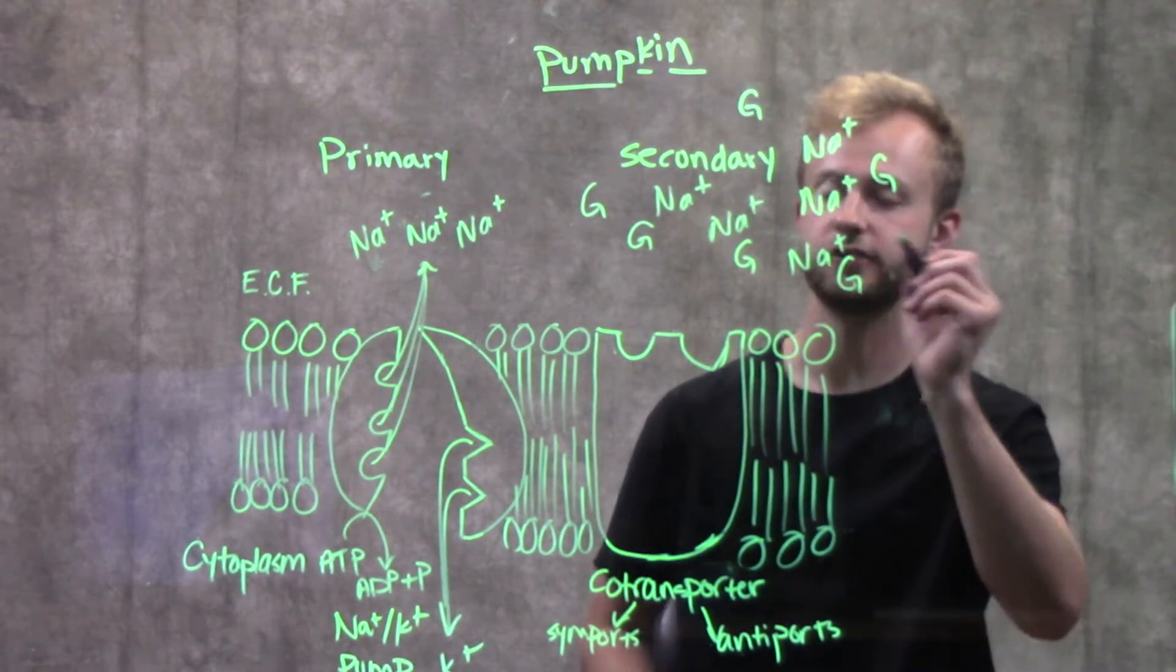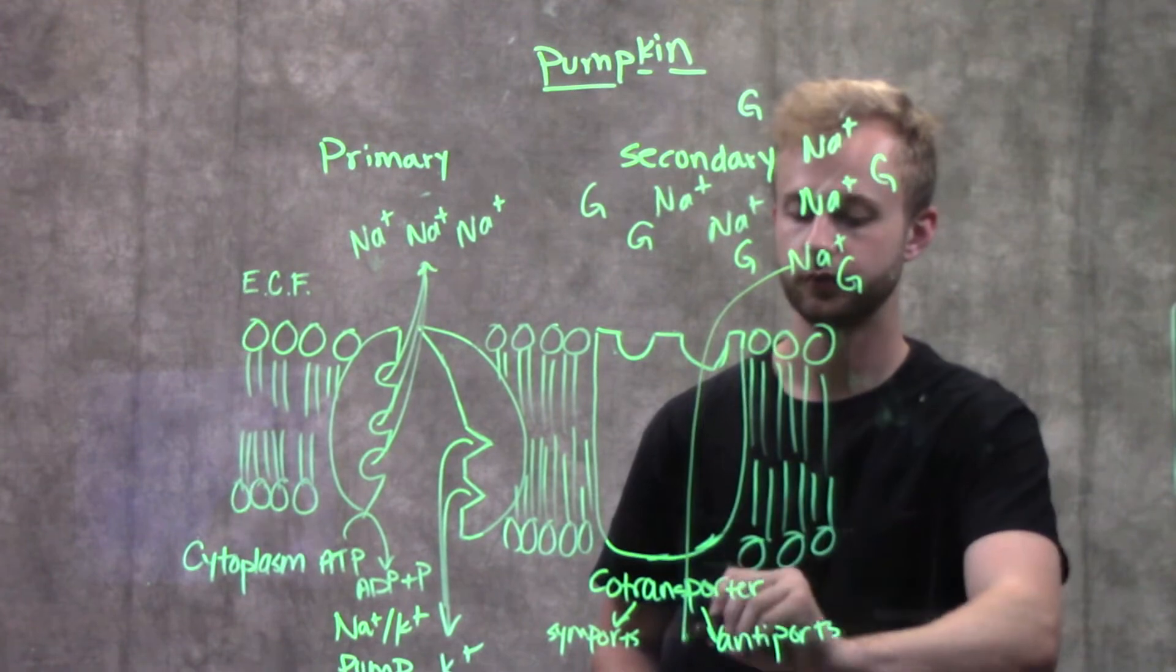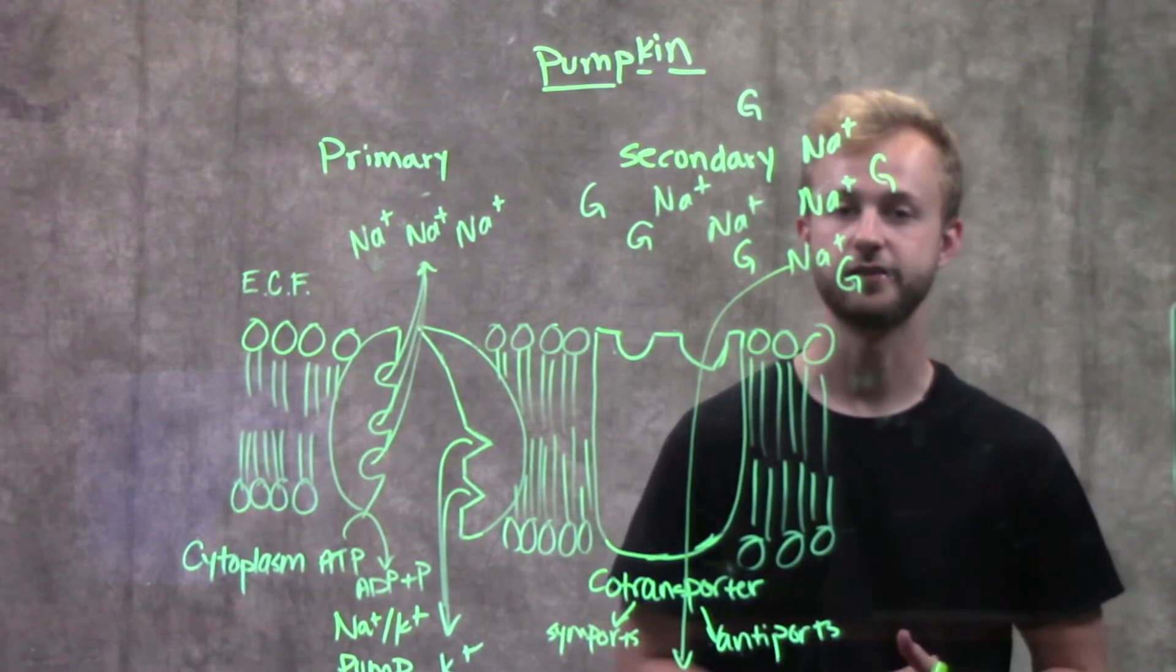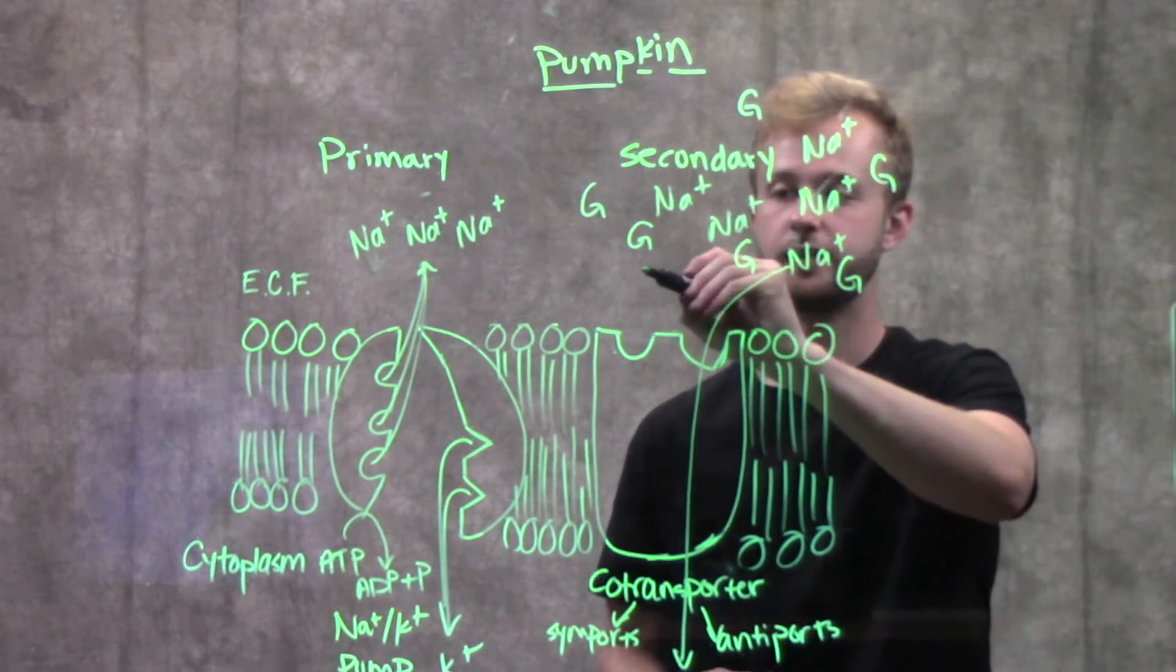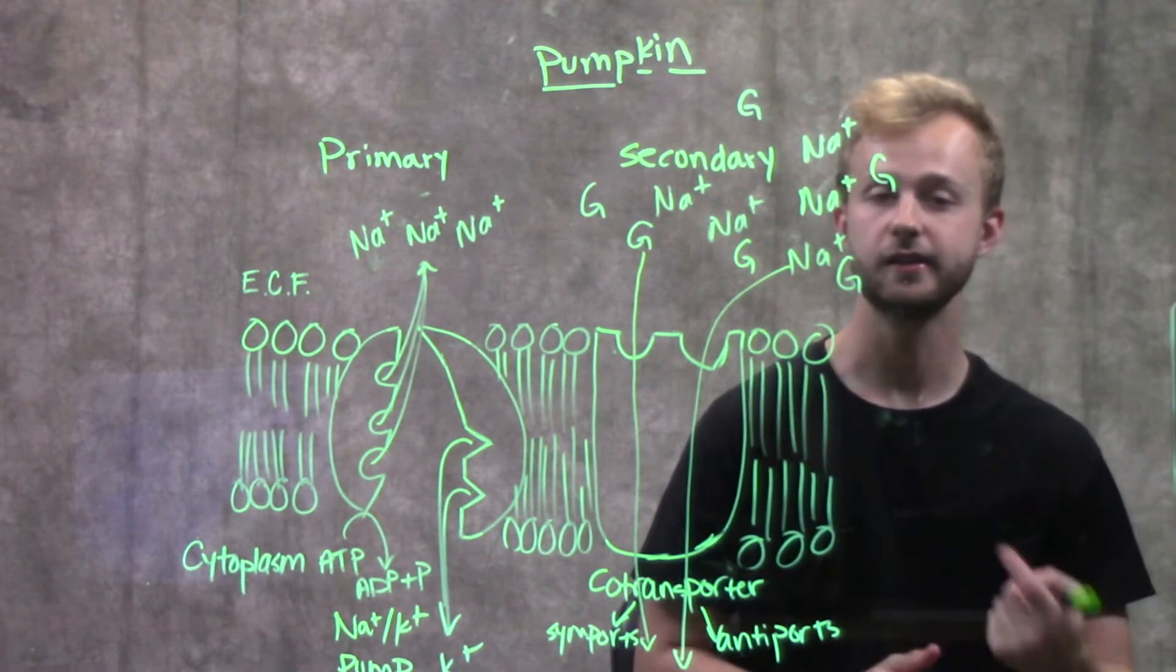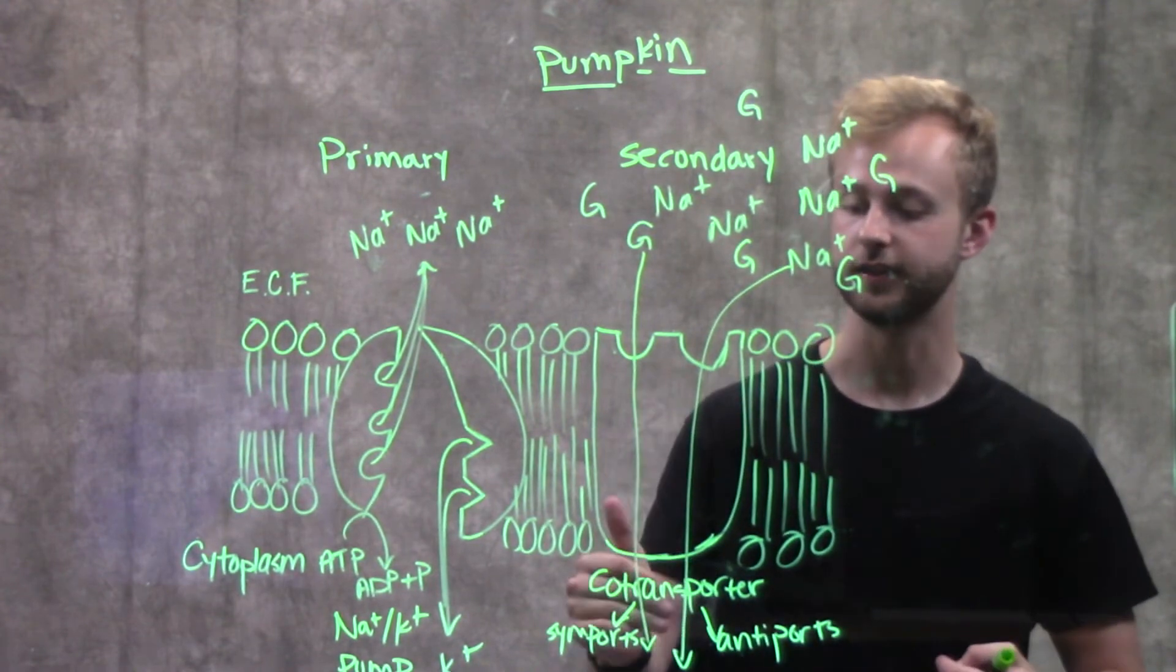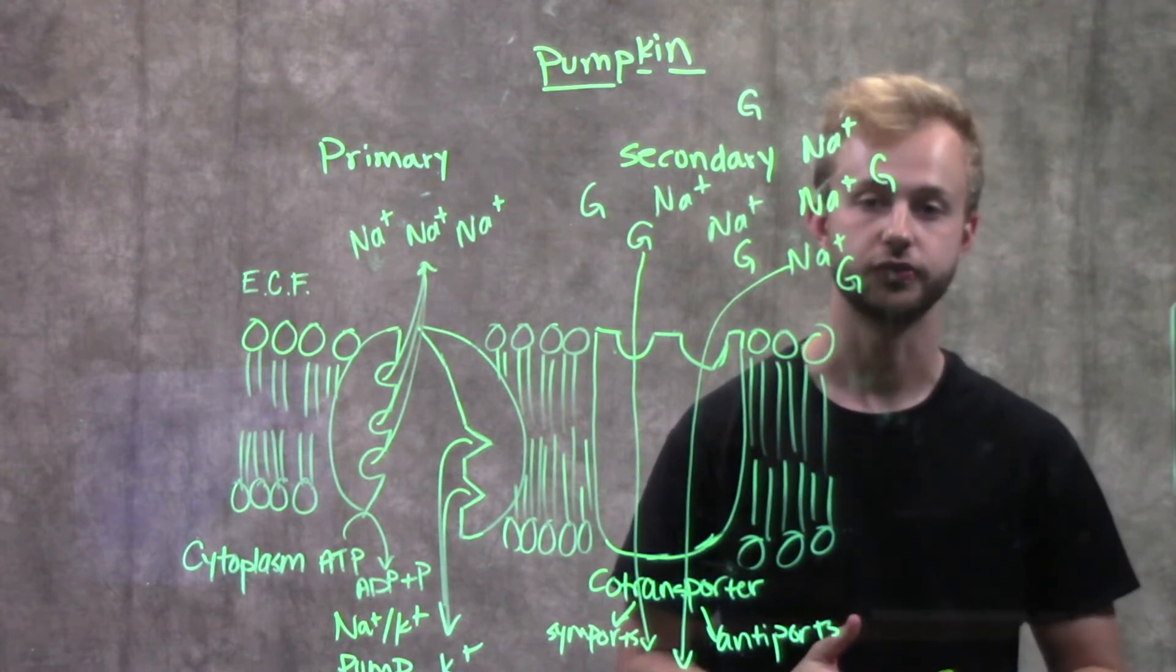So what's going to happen in this scenario is that sodium is now going to be able to flow down a concentration gradient through this protein to the inside of the cell. So when it does this, what happens is that this protein also picks up a glucose and then transports it against its concentration gradient into the cell by coupling it with the movement of sodium down its concentration gradient.